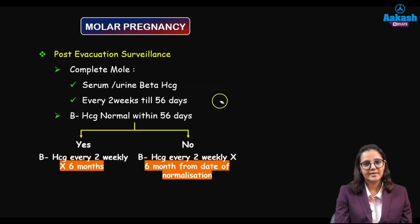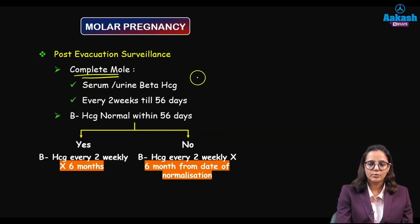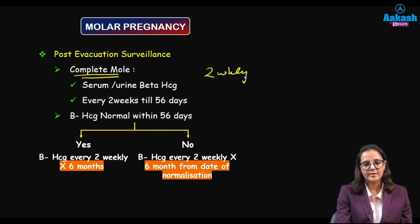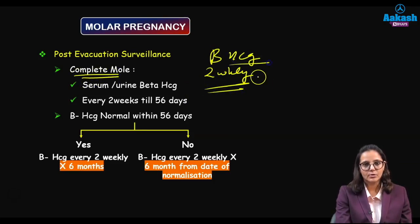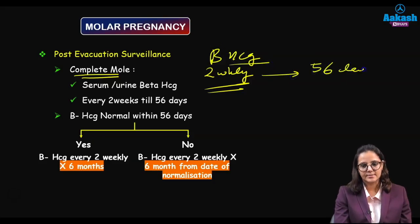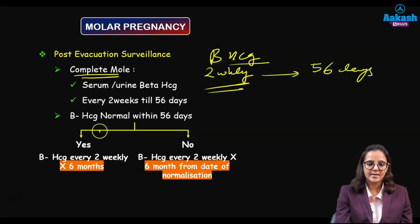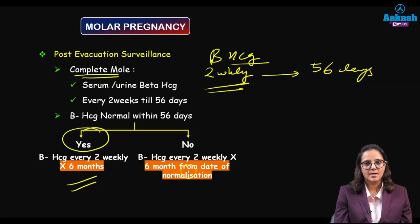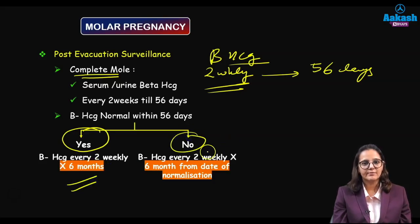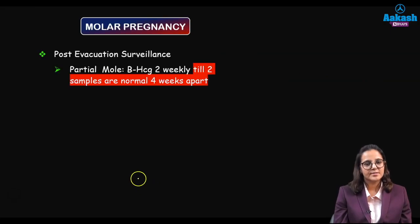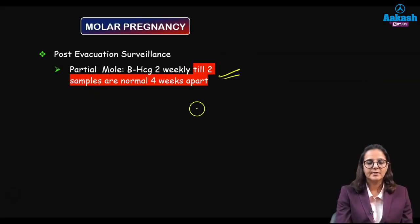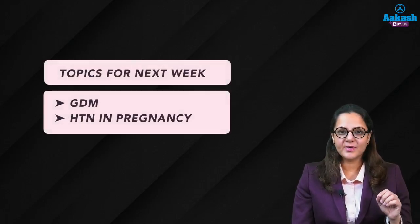Post-evacuation surveillance by beta-hCG is critical. For a complete mole: repeat beta-hCG every two weeks. If it normalizes by 56 days, continue two-weekly testing for a further six months. If beta-hCG has not normalized by 56 days, repeat every two weeks for six months post-normalization. For a partial mole: beta-hCG is done every two weeks until two consecutive negative samples are obtained four weeks apart. Next week we will discuss gestational diabetes mellitus and hypertension in pregnancy.